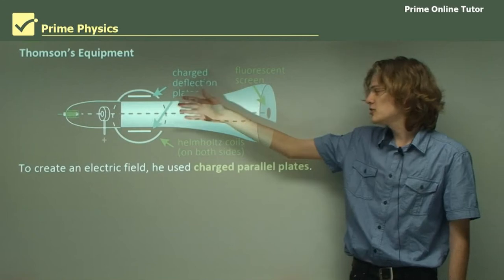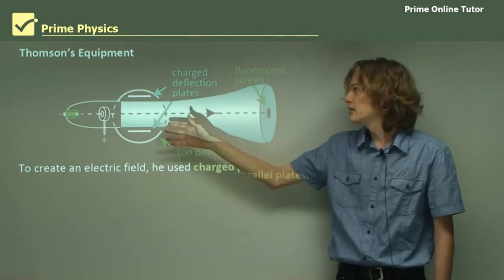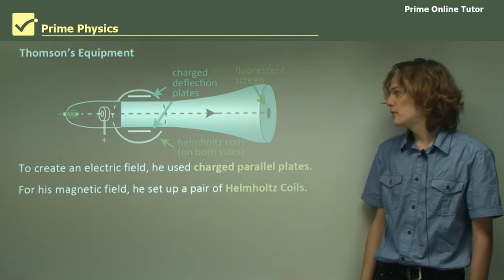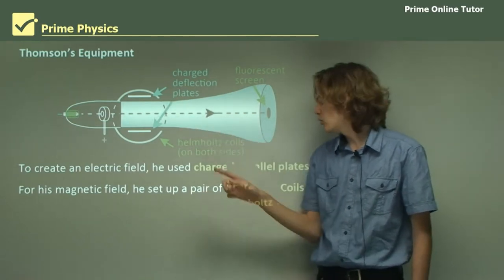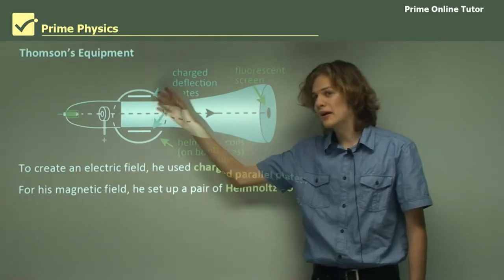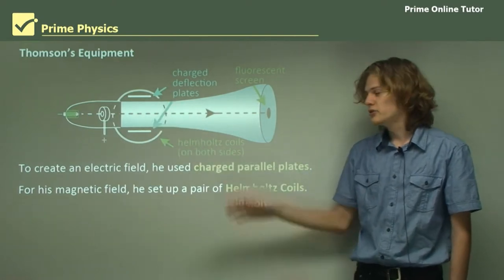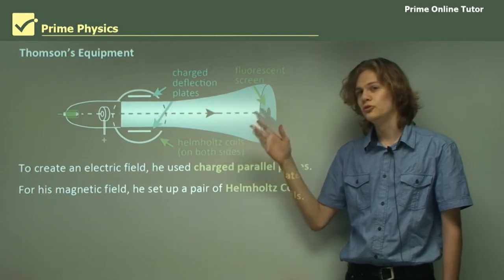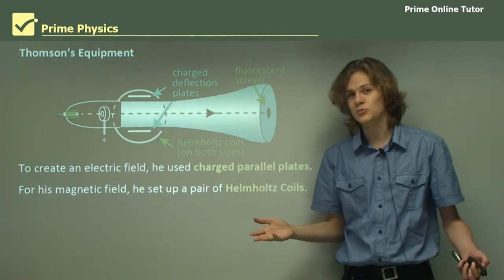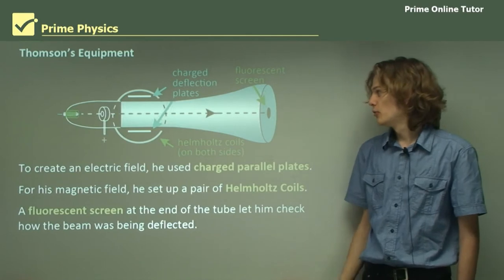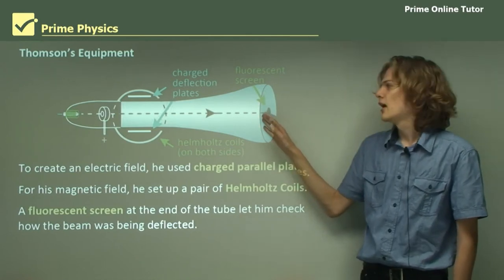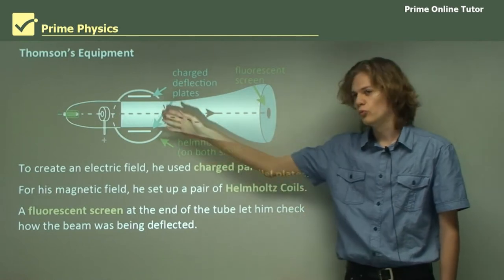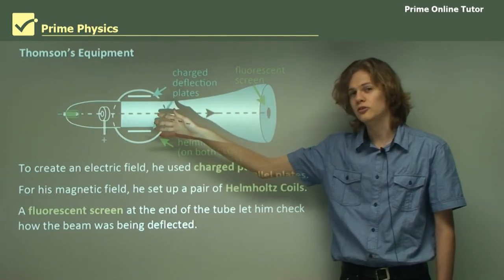In the other side of the apparatus, we had a pair of charged parallel plates to electrically deflect the beam of electrons. We also had a pair of Helmholtz coils, which would produce a magnetic field over here. The charged deflection plates would produce an electric field, and the Helmholtz coils would produce a magnetic field, which is exactly what we need for the experiment. A fluorescent screen was placed at the end, and the beam of electrons would produce a dot in it. This dot would move upwards or downwards, depending on which of these it was being most deflected by.